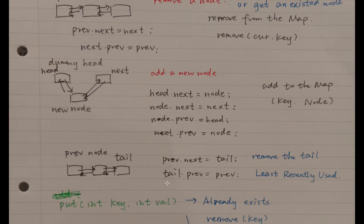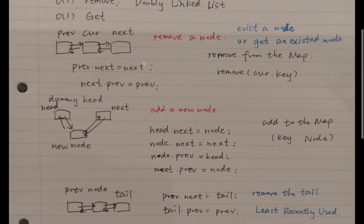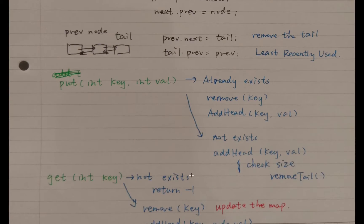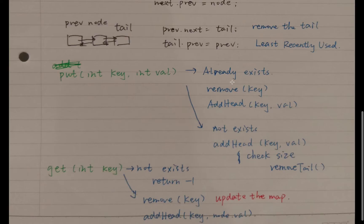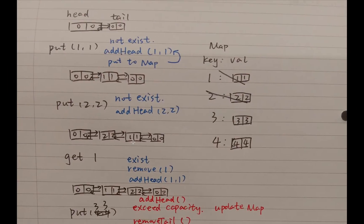This is remove-tail. When the cache reaches capacity, we remove the least recently used node, which is at the tail of the queue. We get the node before tail, and its previous. We link the previous's next to the tail, and the tail's previous to the previous — so we can just call the remove function. For put: if the key already exists, we remove it and add it to the head with the new value. If it doesn't exist, just add it to the head. For get: if the key doesn't exist, return negative one; if it exists, remove the key and add it to the head, then return the value.